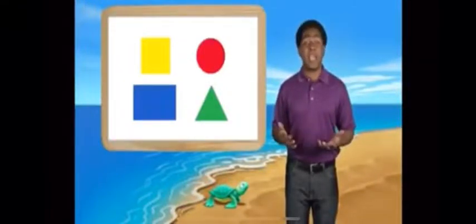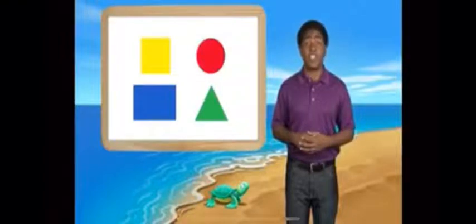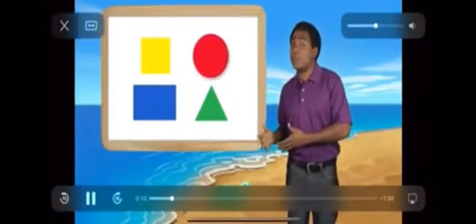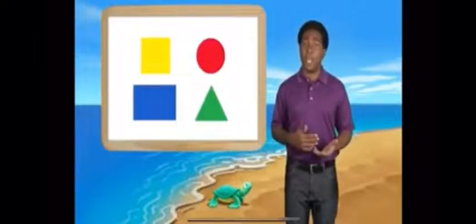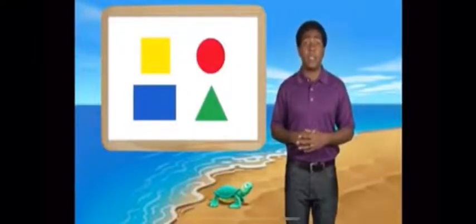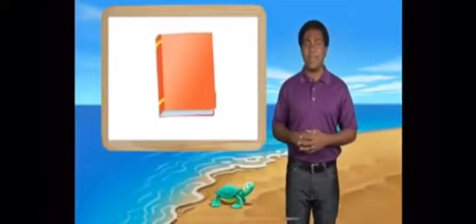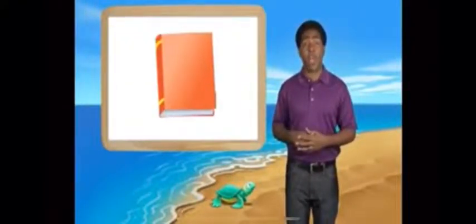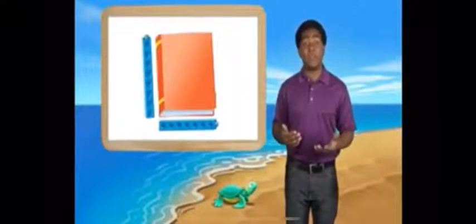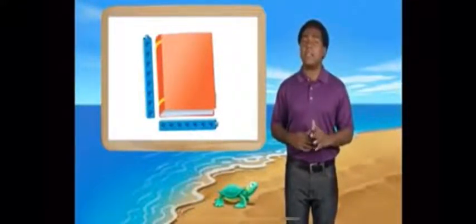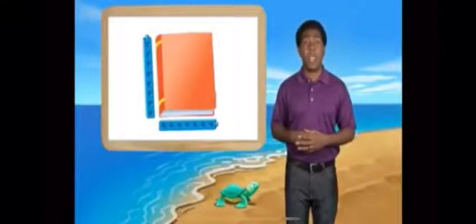If I asked you to describe these blocks, what would you say? You'd probably describe their color and shape — like the red circle or the blue rectangle. But color and shape are only two attributes that can be used to describe objects. Take this book for instance — we can use cube trains to describe its size. The book is seven cubes wide and eight cubes tall. Size is an attribute that can be measured and used to describe an object.